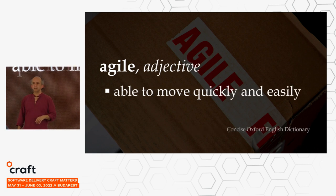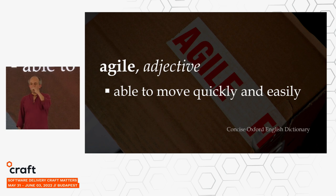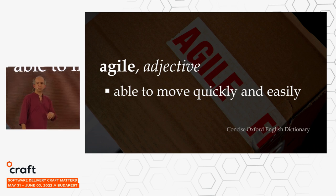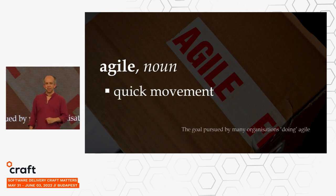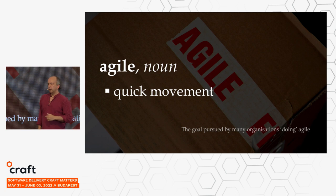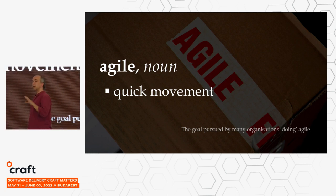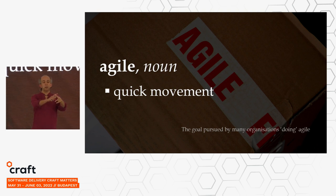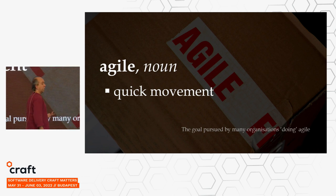Agile is an adjective. That means it describes a property of something — an observable property. It's not a thing that you do. You can do Scrum, you can do Kanban, but you can't do Agile. There are lots of companies 'doing Agile' and I have no idea what that means, because agility is something you observe. You can say that team is more agile than they were six months ago. It's also a term you can apply to your practices and your code base.